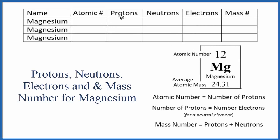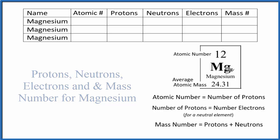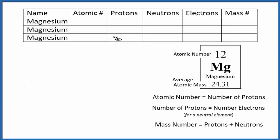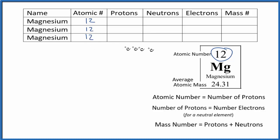In this video we'll find the number of protons, neutrons, electrons, and the mass number for magnesium. Magnesium has three stable isotopes — we'll talk about each one. First, let's fill in the things that are the same for all isotopes. The atomic number of magnesium is 12, and all magnesium atoms have an atomic number of 12. The atomic number equals the number of protons, so all magnesium atoms will always have 12 protons.